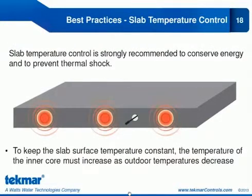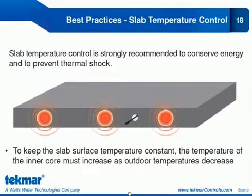Slab temperature control is another best practice associated with snow melting. We want slab temperature control to avoid wasting energy and to protect the slab. If the slab is heated too quickly and the temperature differential is too great, we are at risk of cracking from thermal shock. Effective control is essential to keep the slab surface temperature constant. The way we do that is by varying the temperature to the inner core in relation to outdoor temperature changes — if the outdoor temperature drops, we increase the inner core temperature to keep the slab surface temperature constant.